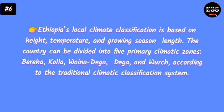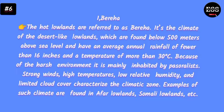The country can be divided into 5 local climate zones. The first zone is the climate of the desert-like lowlands, referred to as Bereha, which are found below 500 meters above sea level and have an average annual rainfall of fewer than 16 inches and temperatures of more than 13 degrees centigrade.